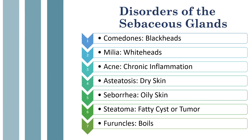First, comedones — these are blackheads, often found on the nose. Milia are little whiteheads; if you see a pustule with a little white head, that could be milia. Then you have acne, which is actually a chronic inflammation of the sebaceous glands. Acne is not just having a bunch of pimples — it's an inflammation of the gland, way deeper than just having a dirty face.